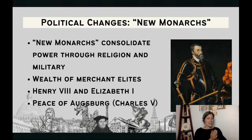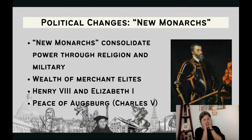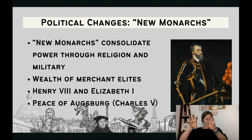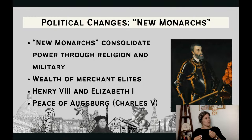Charles V was the leader of the Holy Roman Empire — Central Europe. In 1555 he passed the Peace of Augsburg, which stated that within the Holy Roman Empire, you could determine for yourself whether to practice Catholicism or Lutheranism. This is the first example of religious pluralism existing in Europe during this time period — a plurality of religions, more than one religion, existing at the same time in the same area. This becomes really important when you get to the religious wars.